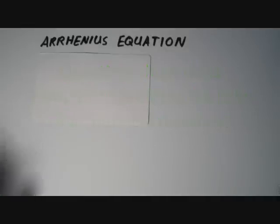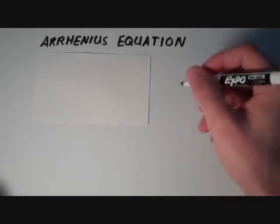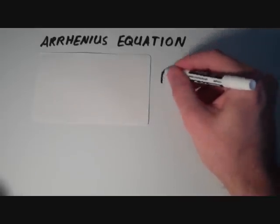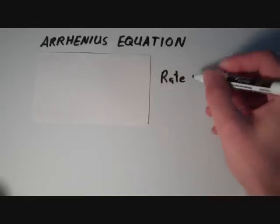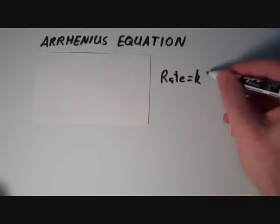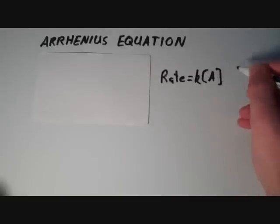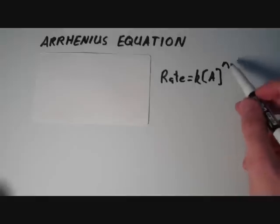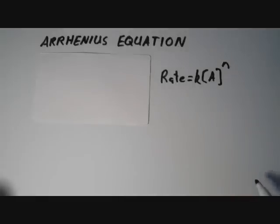So if we turn our attention to a general rate law, suppose we have one reactant. The rate law says that the rate is equal to the rate constant times the concentration of the reactant raised to a power, and the power is called the order of the reaction with respect to this reactant.